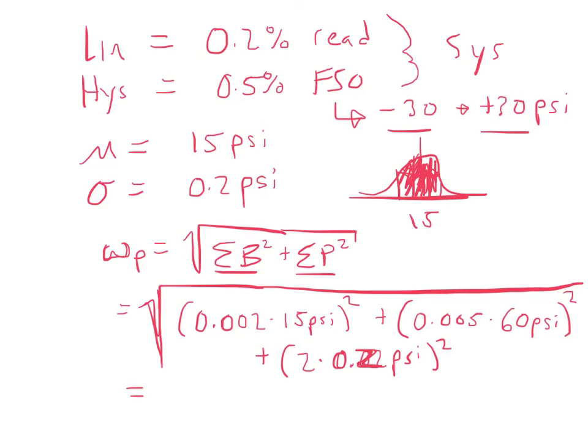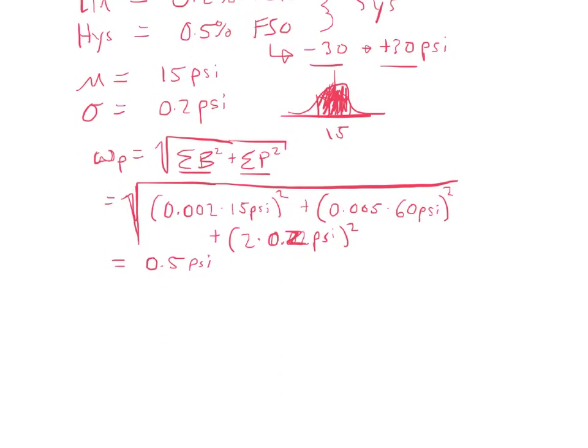Square root of sum of squares, all that together. It gives us a total error of 0.5 psi. So, now, what we can say with this is we have a 95% confidence that our pressure is the mean plus or minus that error. So, we're 95% sure that our measurement is 15 plus or minus 0.5 psi.